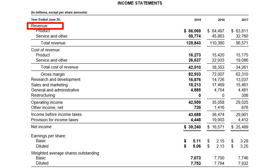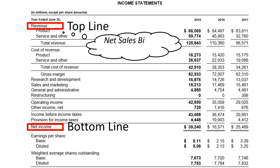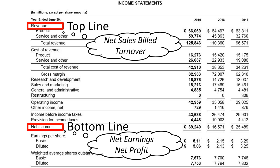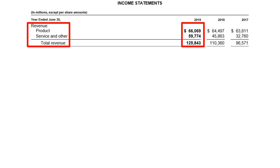To get a quick first impression, we take a look at the revenue at the top of the income statement and net income at the bottom, also known as the top line and the bottom line. Net sales, billings, and turnover are sometimes used by other companies as synonyms for revenue. Net earnings and net profit are sometimes used as synonyms for net income. If CEOs or analysts discuss how revenue and net income have developed, they often refer to top line growth and bottom line growth. One of the interesting things about Microsoft is that it generates revenue from both products and services. Services have been growing so fast over the past years that it's almost a 50-50 split between the two for fiscal 2019.